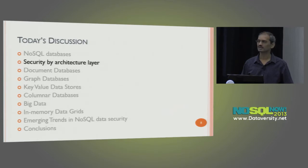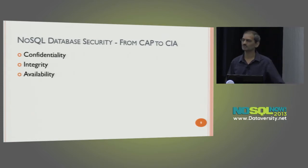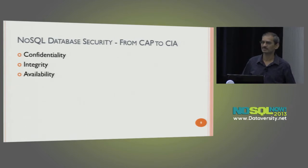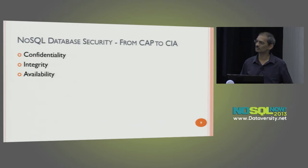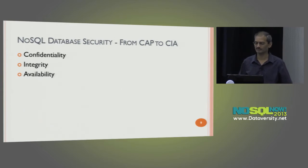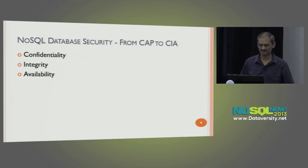Let's look at security by architecture layer. Whenever you hear about NoSQL databases, there is the CAP theorem — Consistency, Availability, and Partition Tolerance — and many NoSQL databases only offer two of those aspects. For example, Cassandra is an AP database, focusing on availability and partition tolerance. When it comes to security, we also need to look at the CIA acronym: Confidentiality, Integrity, and Availability. CAP is good for performance and scalability, but CIA is also needed for the security side of any database, including NoSQL.